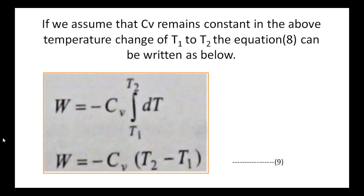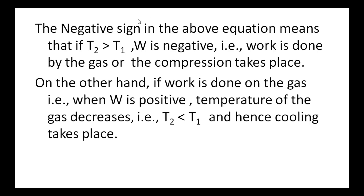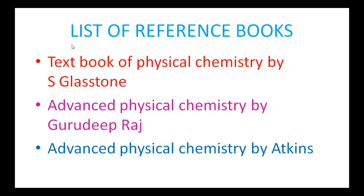This is the equation for the calculation of work done in adiabatic reversible expansion of an ideal gas. The negative sign in the above equation means that if T2 is greater than T1, then W is negative — that is, work is done by the gas or compression work takes place, hence temperature increases. On the other hand, if work is done on the gas when W is positive, the temperature of the gas decreases — T2 is less than T1, hence cooling takes place. These are the reference books for this unit: physical chemistry.